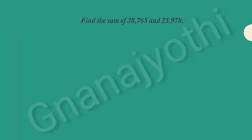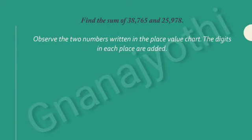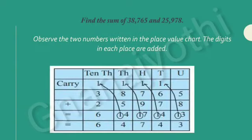Find the sum of 38,765 and 25,978. If we observe these numbers, these are 5-digit numbers. Now, we have to find the sum or addition of these 2 numbers. Observe the 2 numbers written in the place value chart. The digits in each place are added. So, if we add these 2 five-digit numbers, we get 64,743.